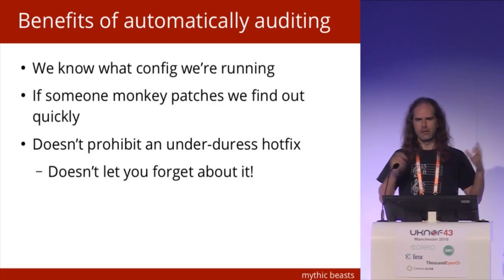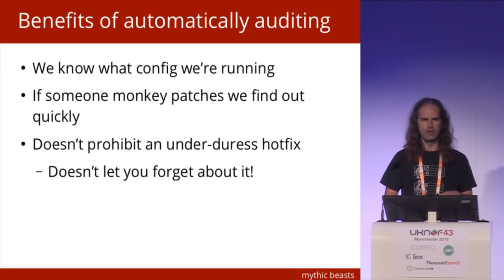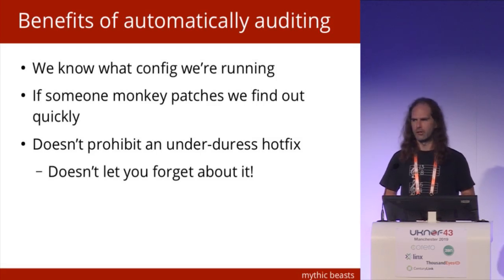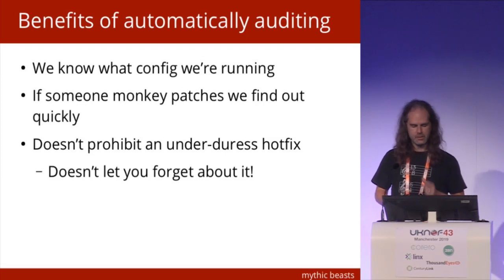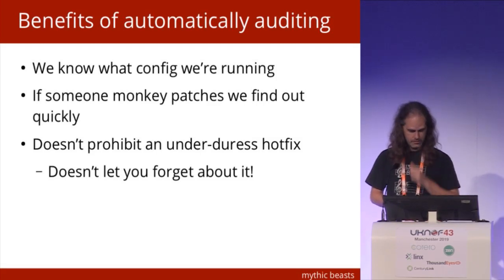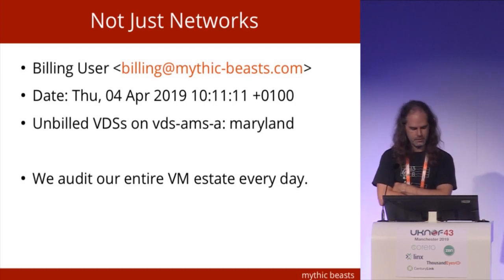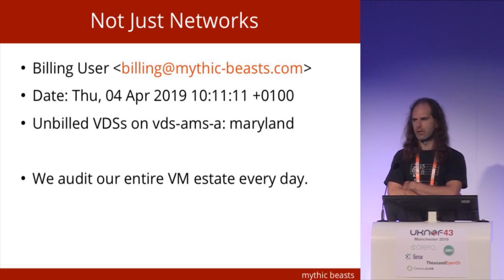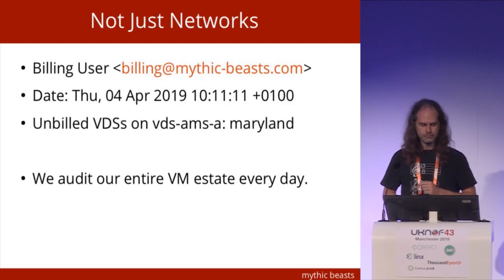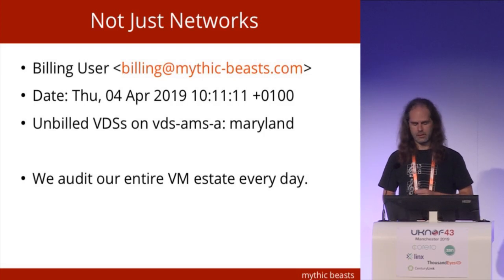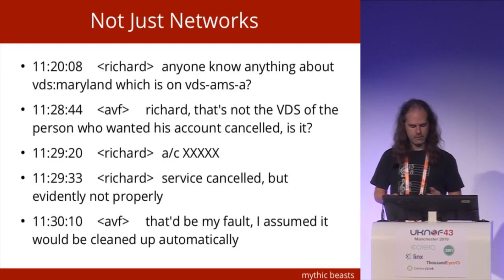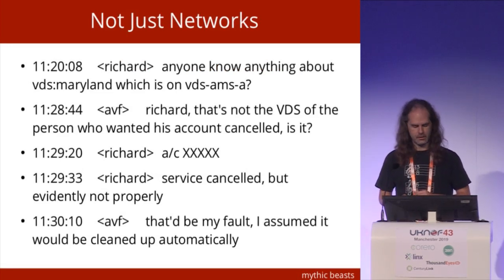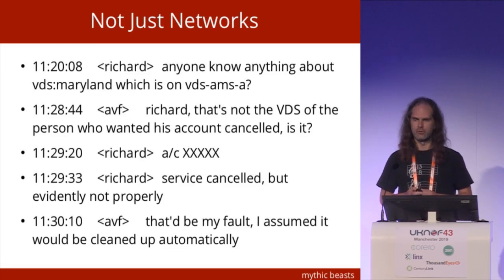You can do an oh-my-God-the-world-is-on-fire, I need to just put this config in now to make everything stabilize. If you do that, the next day a ticket will get generated that says why is this here, can it go, do we need to fix our config management system? But it's not just networks — we do this lots. Thursday at 10 o'clock in the morning we got an email: ticket gets generated for us which says we found a VM called Maryland and we don't know who's paying for it. We do our entire VM estate every single day. An hour later, someone says having done a bit of investigation — anyone know anything about it? Alex says oh yeah, I cancelled that yesterday. It turns out Alex didn't do it properly, it got cleaned up, our audit is now clean again.